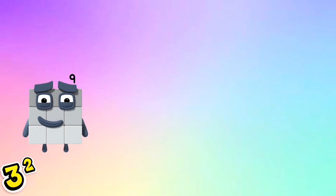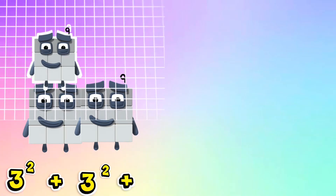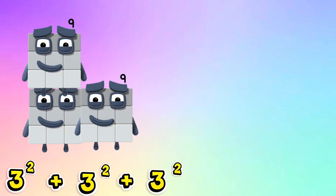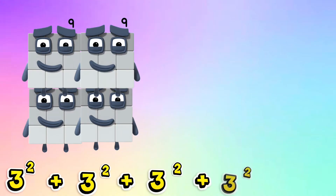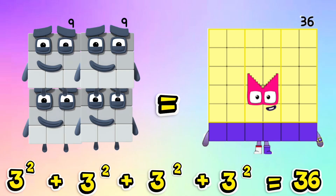Third example: 3 squared plus 3 squared plus 3 squared plus 3 squared is equals to 36.